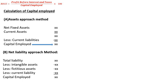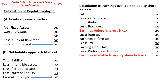After knowing how to ascertain capital employed, we will understand how to ascertain profit before interest and taxes. First, take sales and deduct variable cost to get contribution. Then deduct fixed cost to arrive at earnings before interest and taxes (EBIT). This figure is used for calculating return on capital employed. Deducting interest gives earnings before tax; deducting tax gives earnings after tax; and deducting preference dividend gives earnings available to equity shareholders.